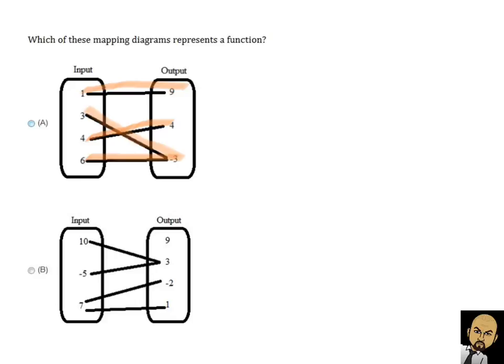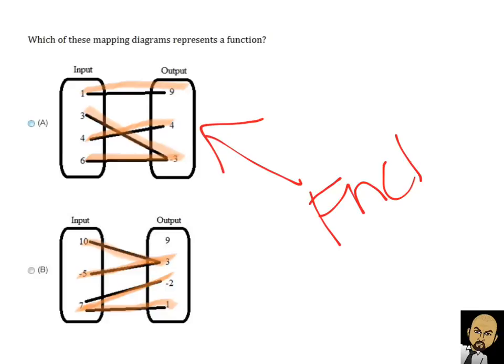Now let's take a look at part B. The input ten is paired with positive three — only one output. Negative five is paired with positive three — only one output. But seven is paired with negative two, and seven is also paired with one. Because seven is paired with more than one output, it is not a function. So the function is A.